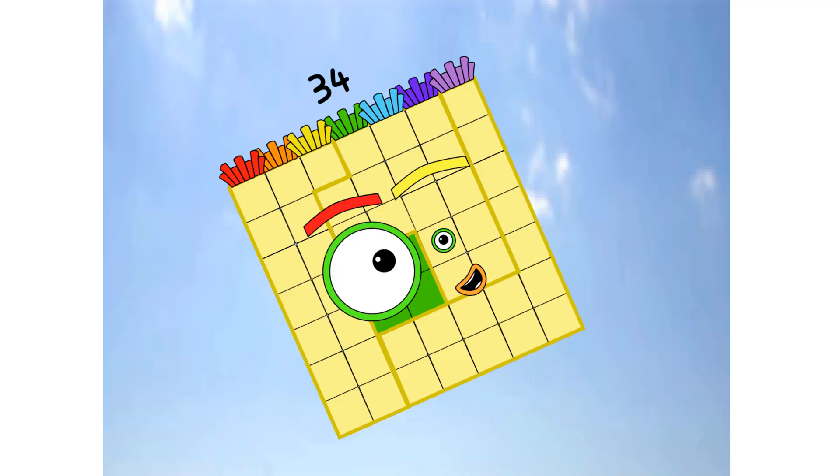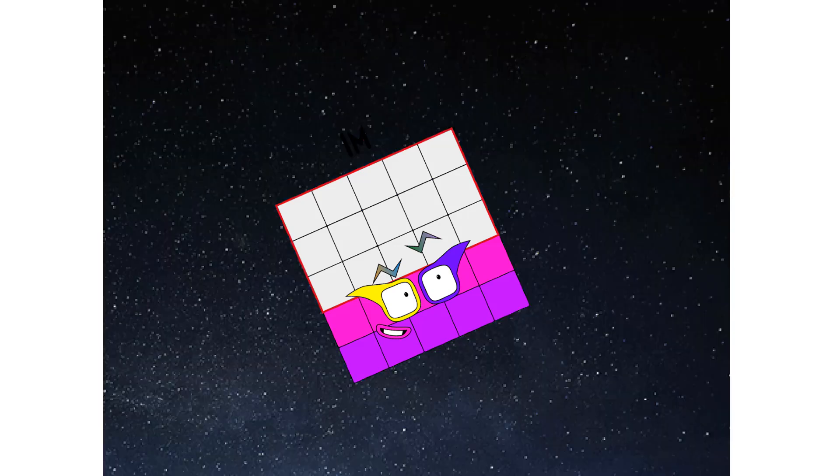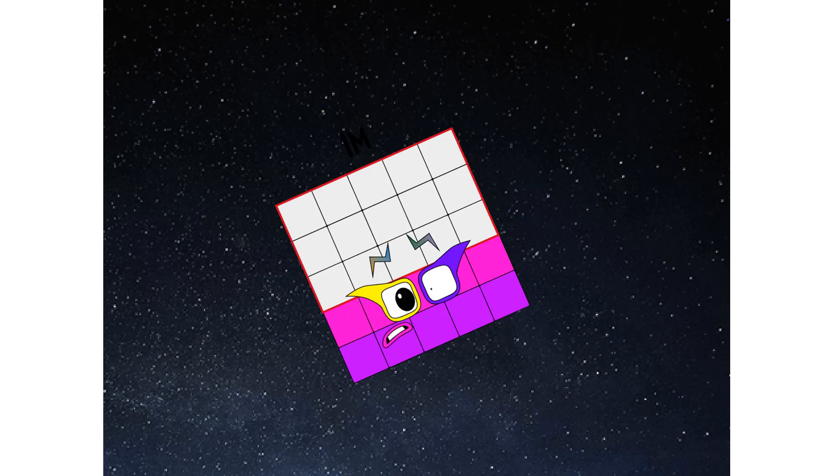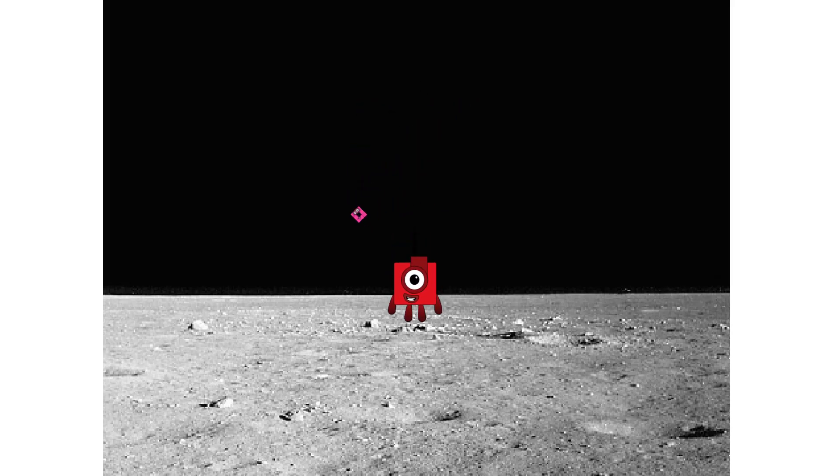Primary launch stage completed. Engaging secondary star. We've reached space. Second stage complete. Entering lunar orbit. Launching lunar lander. The square has landed.